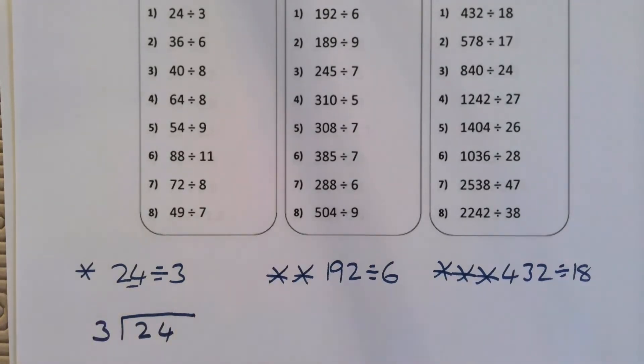And what we look at here is three's into two, that doesn't go at all, carry the two over, three's into 24, that just goes eight times. So the answer there is just eight.